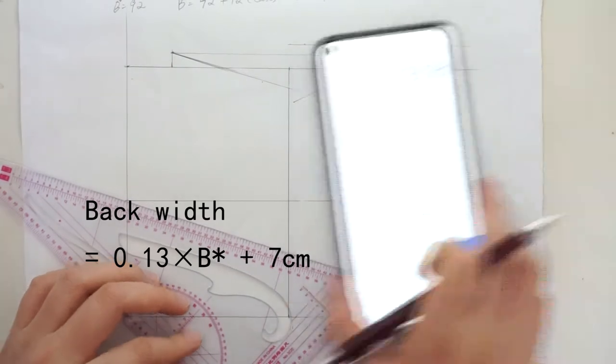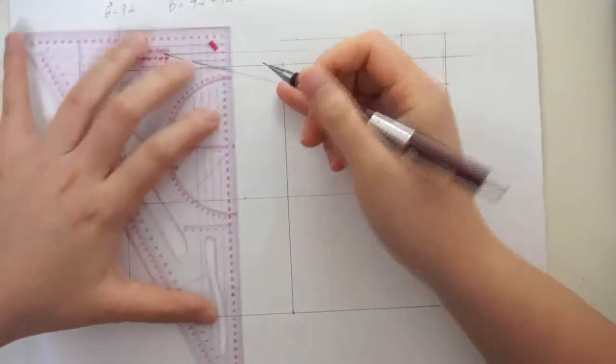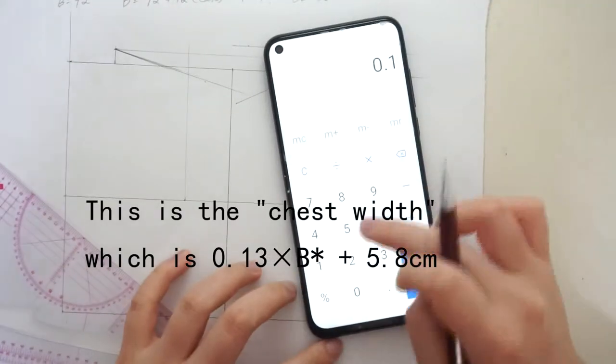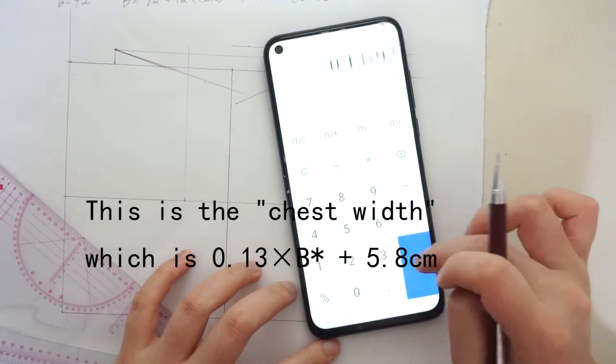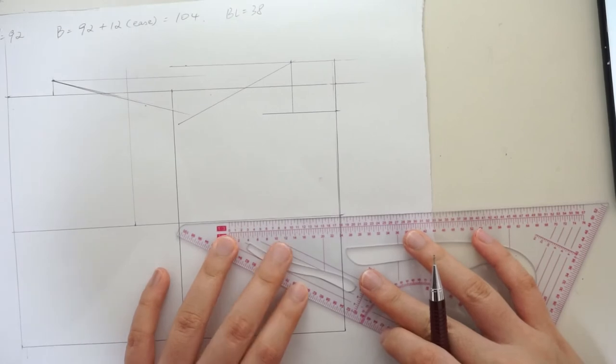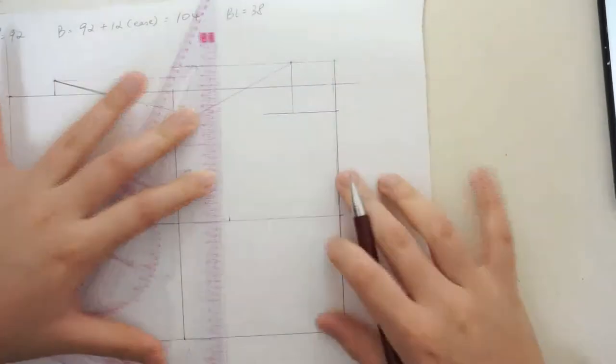Next, we need to find the back width. Calculate 0.13 times B star plus 7. Find that distance from your center back and draw a perpendicular line there. Now we do the front by calculating 0.13 times B star plus 5.8. Find the distance from your center front and draw a line there. Now you have a frame in the middle and this is the frame for your armhole.